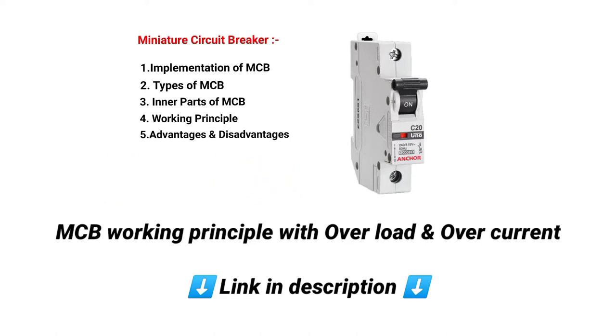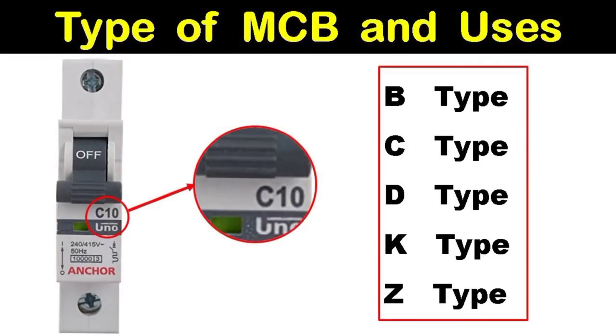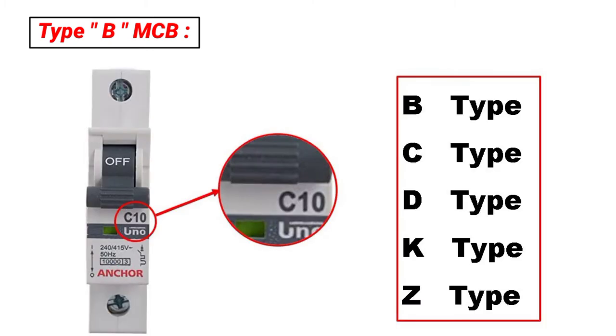This is an explainer video on types of MCP. MCP has 5 basic types: B, C, D, K, and Z. These are the major types we are going to cover.